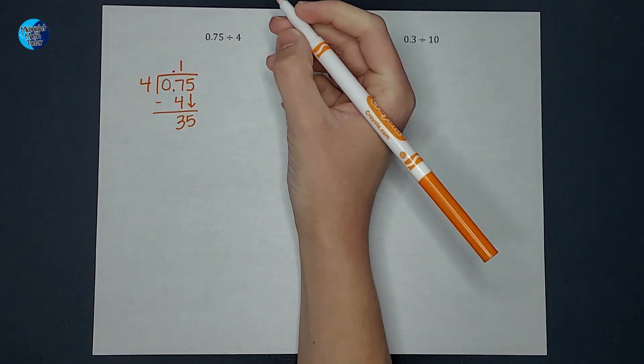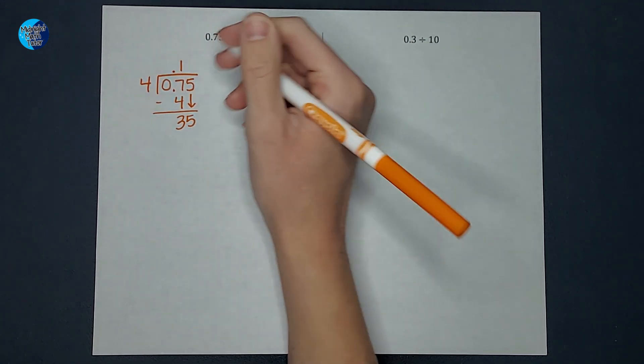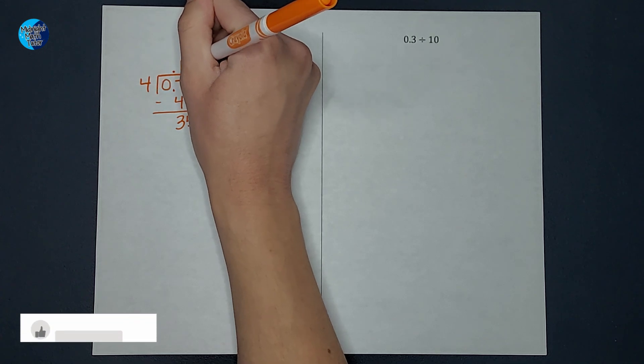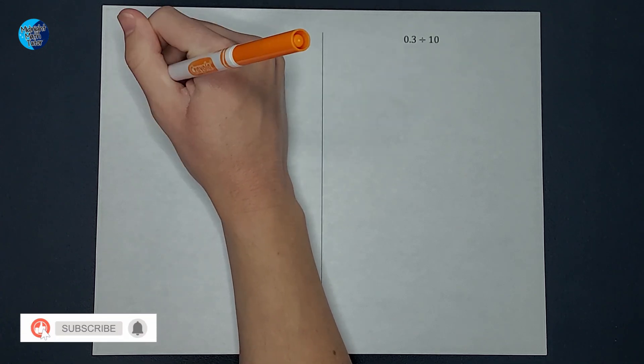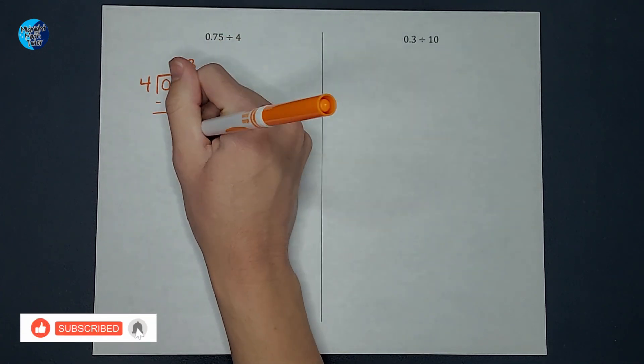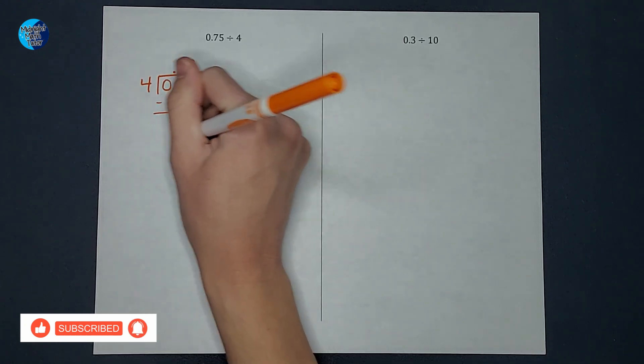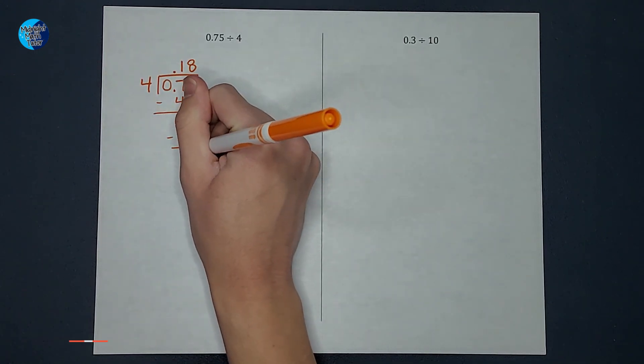How many times does 4 go into 35? It goes 8 times. 8 times 4 gives me 32. And I subtract and get 3.